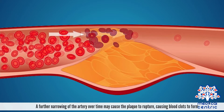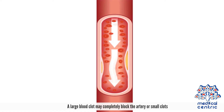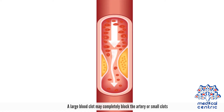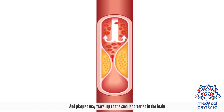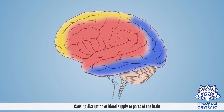A further narrowing of the artery over time may cause the plaque to rupture, causing blood clots to form. A large blood clot may completely block the artery, or small clots and plaques may travel up to the smaller arteries in the brain, causing disruption of blood supply to parts of the brain.